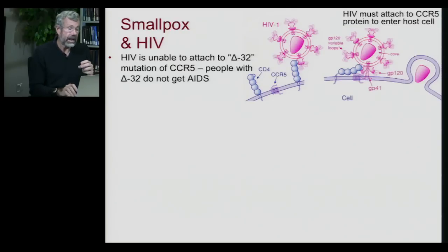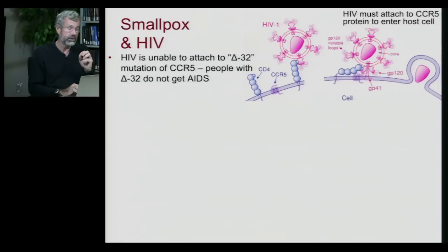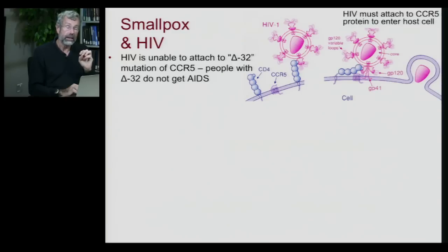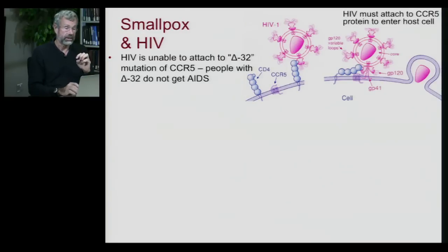Now, as it happens, a proportion of humans carry a mutation called the Delta 32 mutation of the CCR5 receptor. And if a person happens to have the Delta 32 allele, they don't get AIDS.